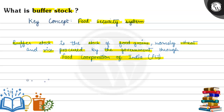Through FCI, the government procures wheat and rice — that is known as buffer stock — and it creates the stock for emergency purposes or for distribution among the poor.